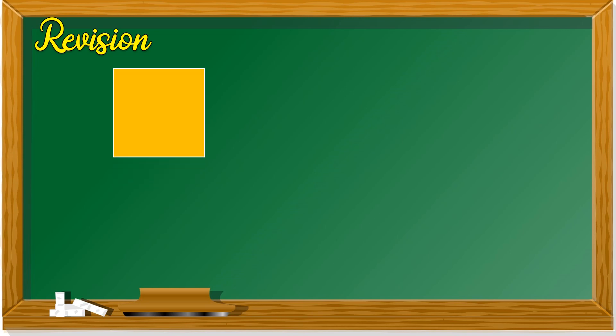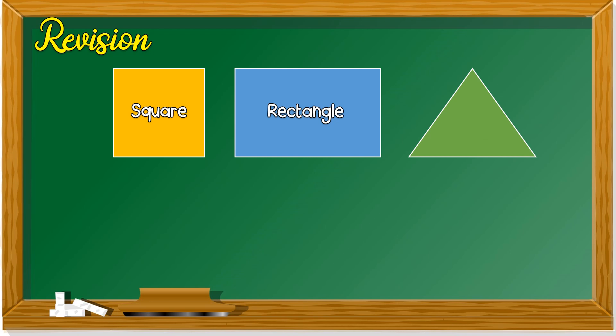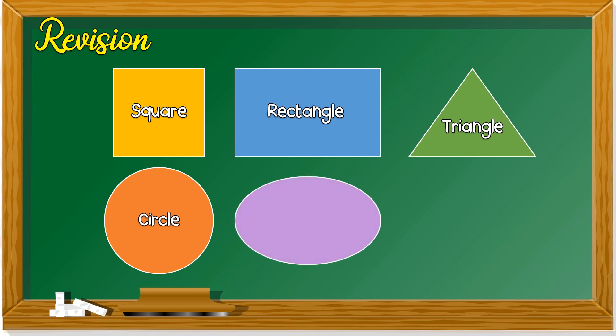This is a square. This is a rectangle. Triangle. How about this? Circle. Last one, oval. One more, it's a new one. It looks like a triangle but the bottom is curved. This shape is called a segment.